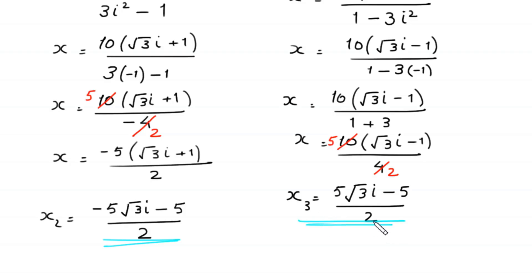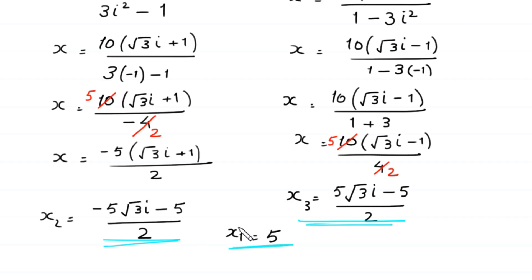So the three solutions of this equation are: x equals 5, x equals (negative 5√3i minus 5)/2, and x equals (5√3i minus 5)/2.